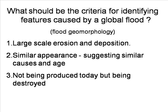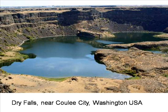If we are hoping to identify features caused by a global flood and the consequent sheet flow and channel flow of water, what criteria should we use? They should be on a large scale all over the world and originate in water-laid rock. They should be similar in appearance, suggesting a common cause and age, and importantly, they should not be being made today. They should be largely intact if they were only thousands of years old, and not millions.